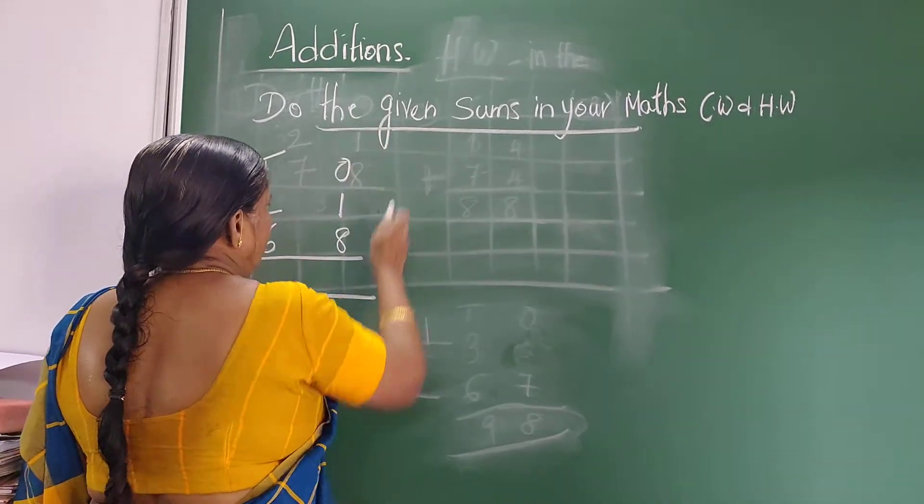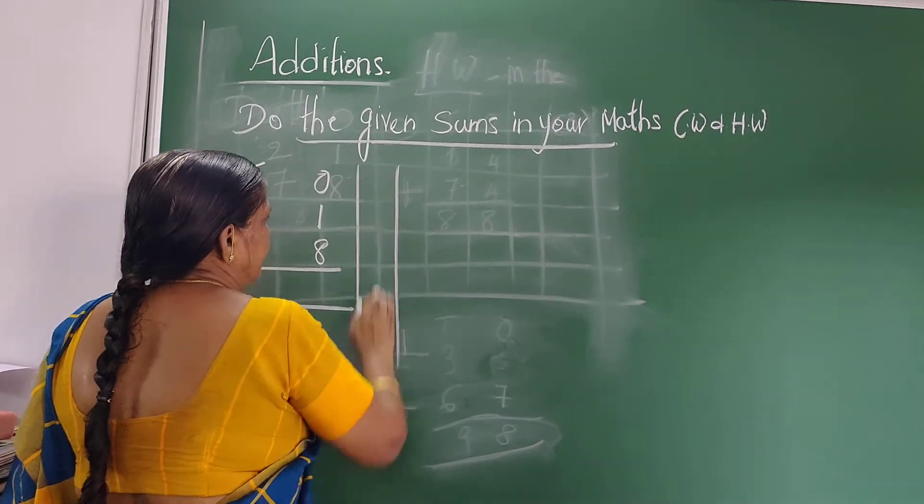This is the first sum. Here you leave a line. Now don't write anything here.